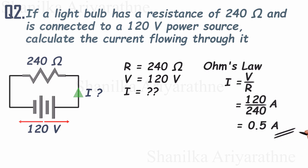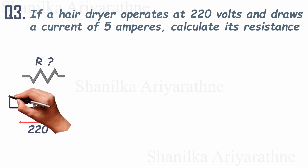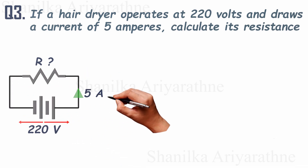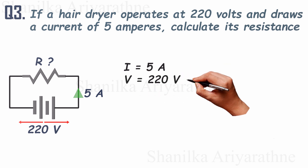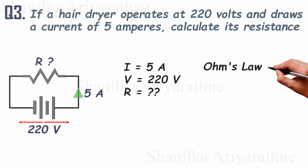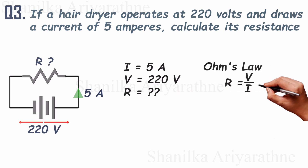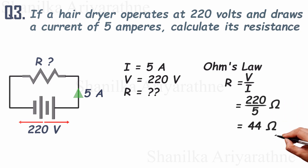Let's discuss one last problem. If a hairdryer operates at 220 volts and draws a current of 5 amperes, calculate its resistance. The current is 5 amps and the voltage is 220 volts. Using Ohm's law — resistance equals voltage divided by current — and substituting the values, the resistance of this hairdryer is 44 ohms.